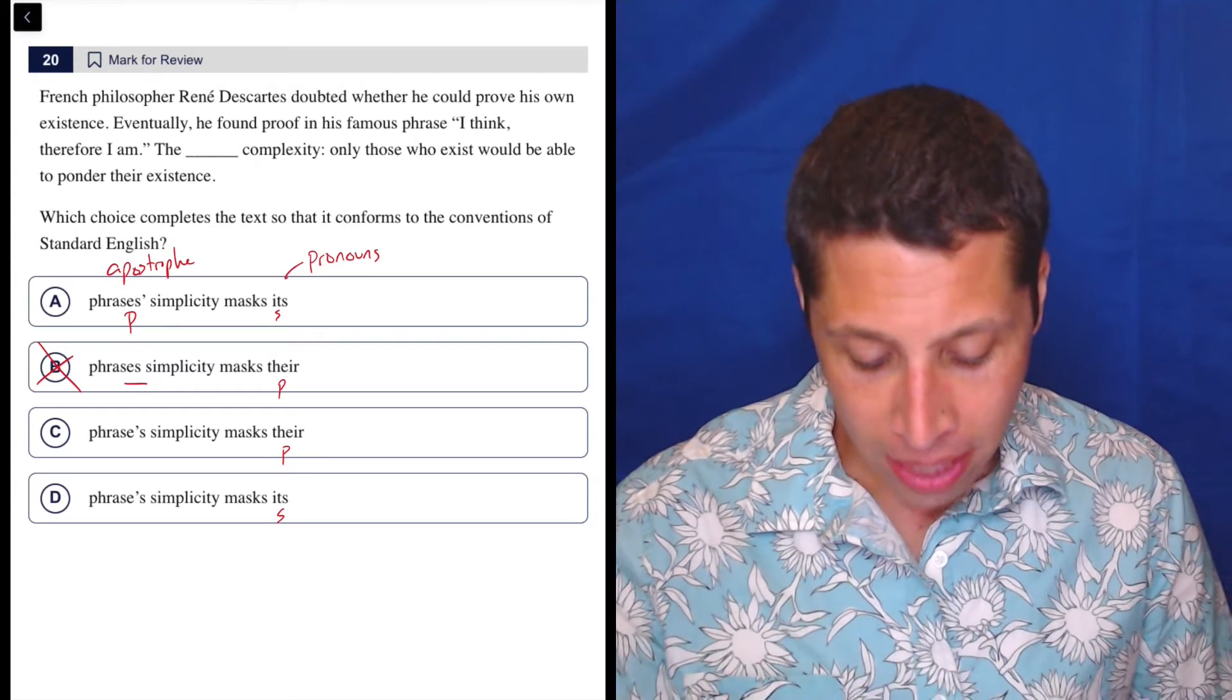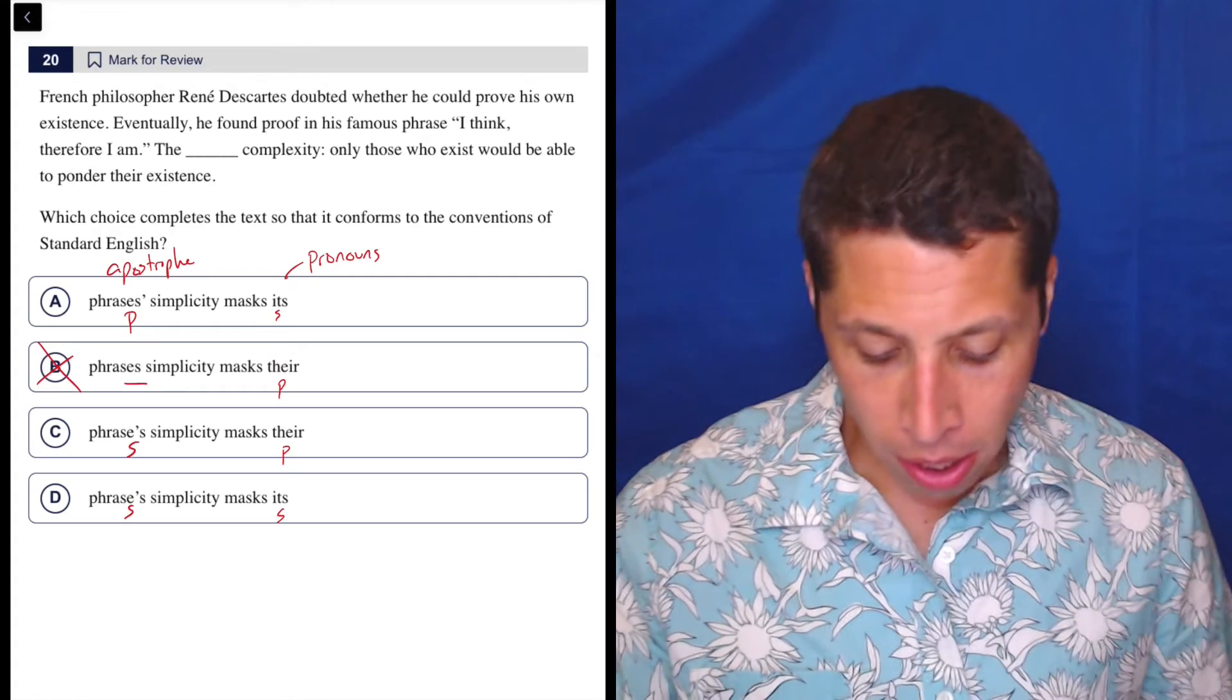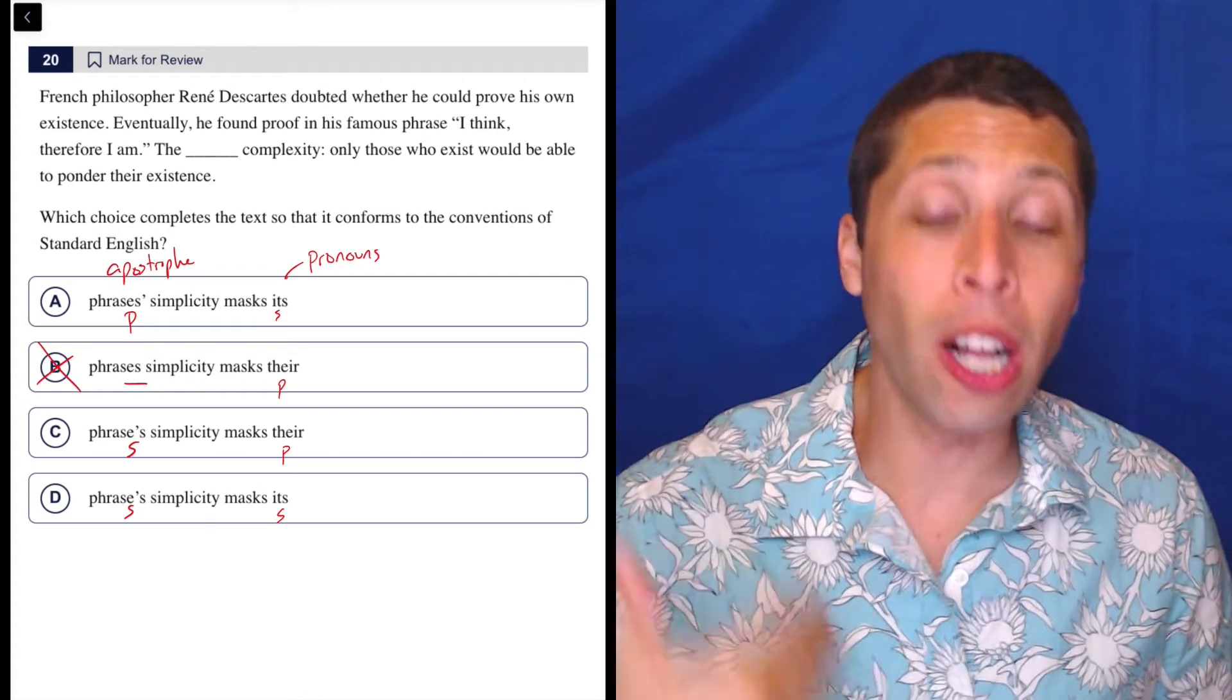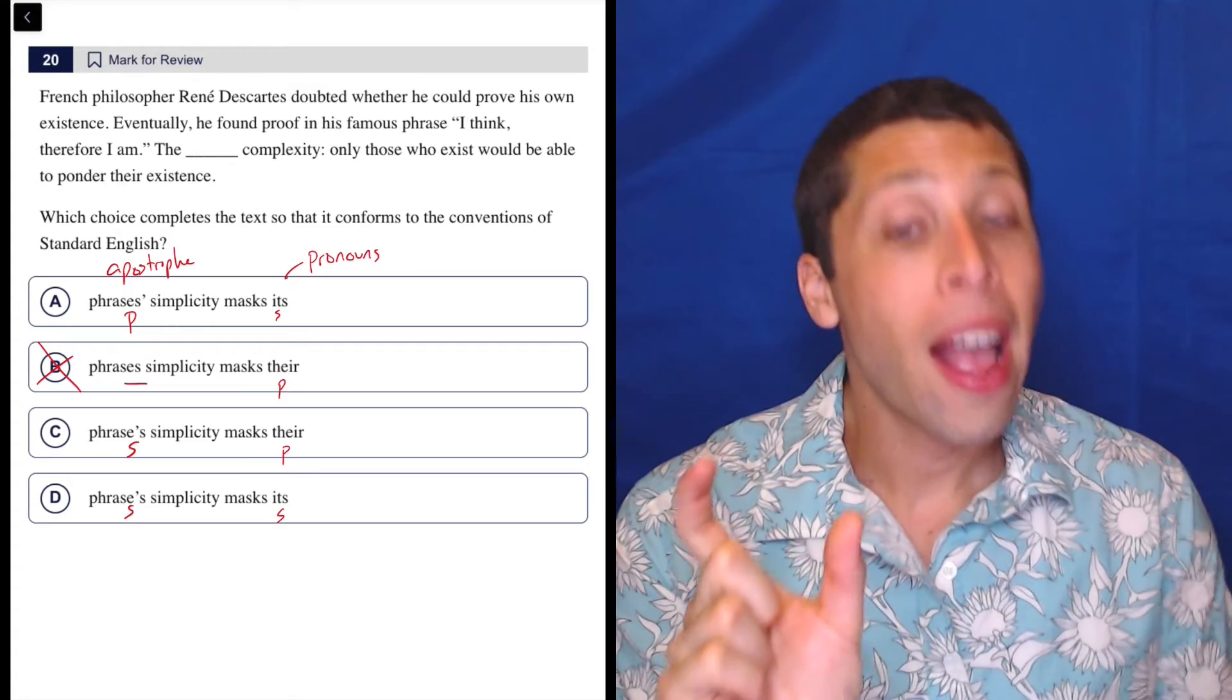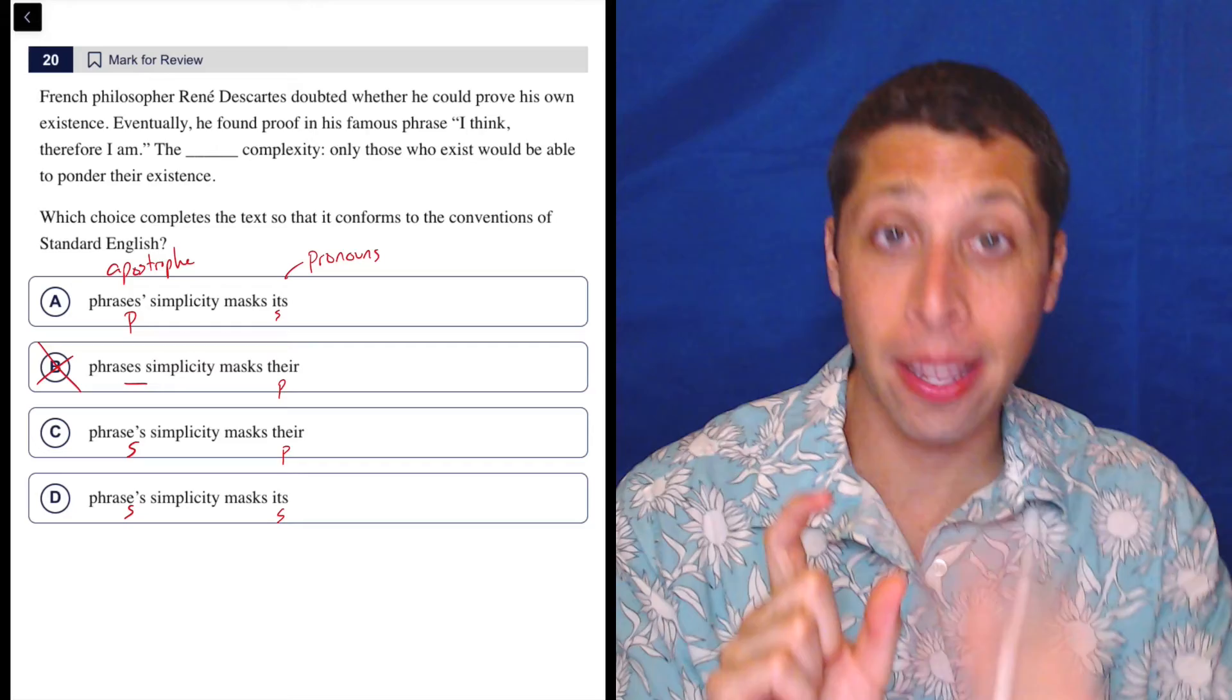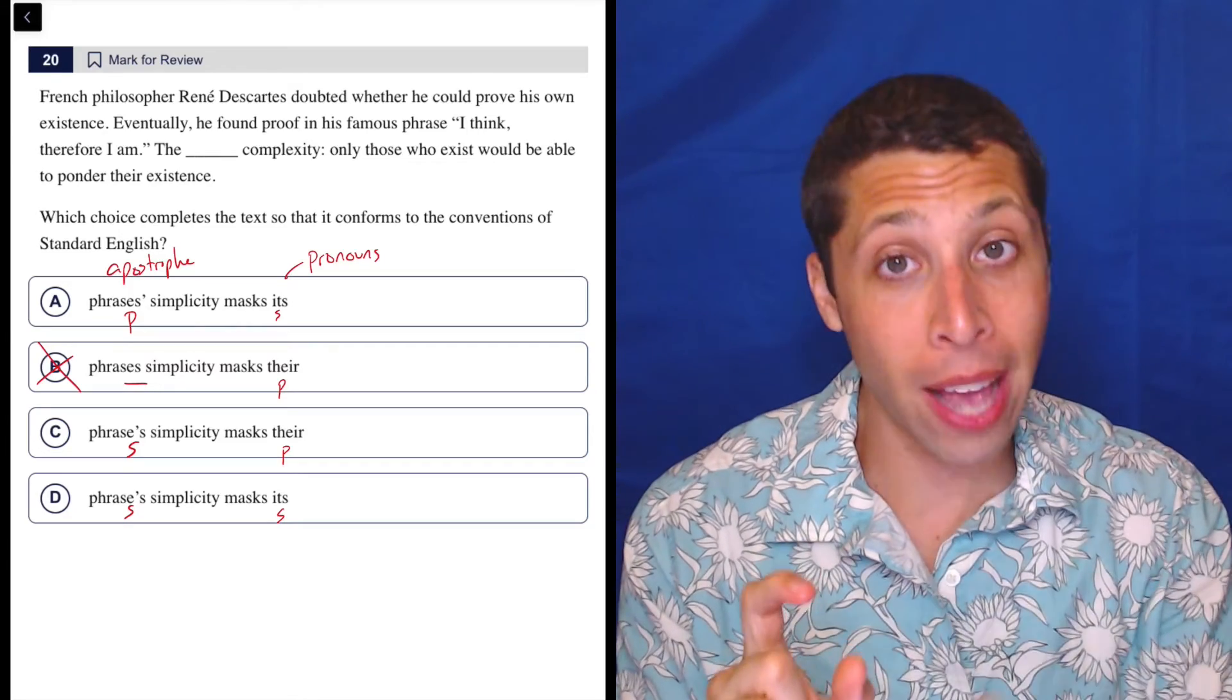Whereas in choice C and D, those are both singular because the S is added along with the apostrophe. It was originally the word phrase, singular. And then in order to make it possessive, we had to add the apostrophe and we had to add the letter S.